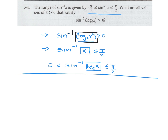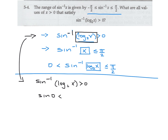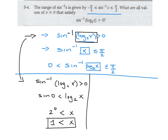Now let's solve the question. Using the condition that arcsin(log base 2 of x) is greater than 0, that means log base 2 of x is greater than sin(0), which equals 0. Therefore, 2 to the power of 0 is less than x, meaning x is greater than 1. That's a pretty good finding.